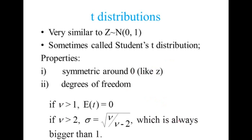The t-distribution is very similar to z-distribution with normally distributed mean equal to zero and variance equal to one — sometimes called Student's t-distribution. Properties: symmetric around zero, just like z. Degree of freedom (nu) equals n minus 1. If degree of freedom is greater than 1, expected value of t equals zero. If degree of freedom is greater than 2, standard deviation equals square root of nu over (nu minus 2), which is always bigger than 1.